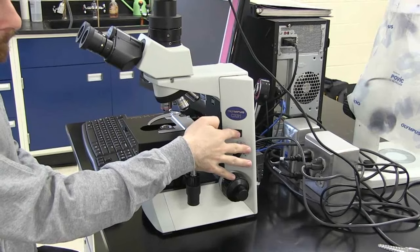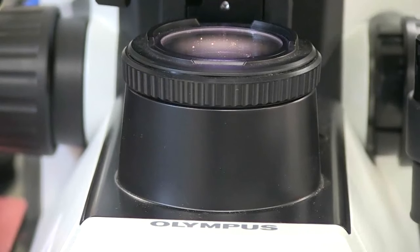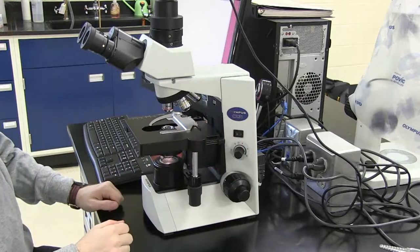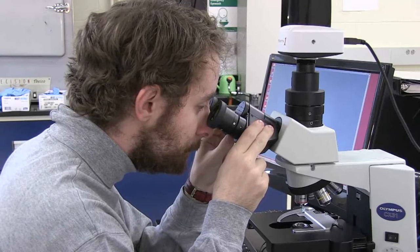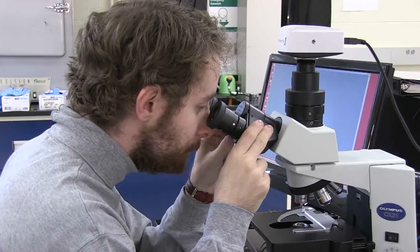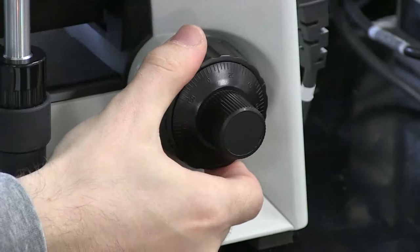Begin by turning on the microscope. Adjust the ocular eyepieces to match your interpupillary distance, such that when looking through the microscope with both eyes, you should see one image.